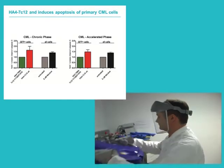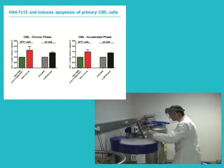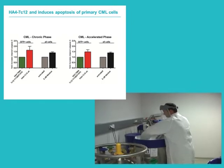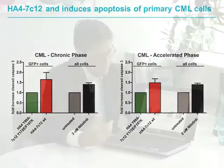We then moved on to patient cells that were infected with a lentiviral vector that expresses the tandem monobody. These targeted cells actually have an increase in apoptosis — they stop growing — comparable to the increase in apoptosis obtained with imatinib treatment.